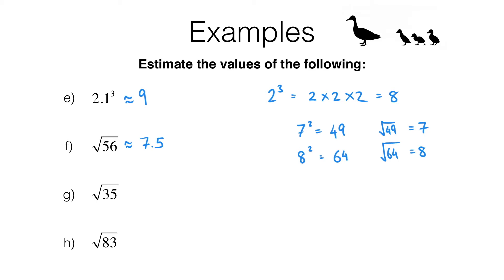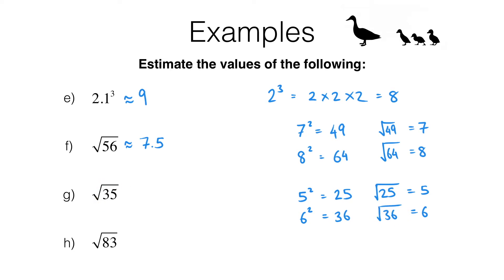In part g, we need to find the square root of 35. I know that 5 squared is 25 and 6 squared is 36, so the square root of 25 is 5 and the square root of 36 is 6. I'm looking for the perfect squares just above and below 35 — those are 25 and 36. Since 35 is a lot closer to 36, the square root of 35 is going to be a lot closer to 6, so I estimate 5.9.